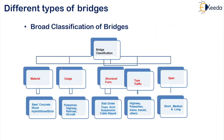This is the broad classification of bridges which you can see in one layout. The classification of bridges: first is based on the material — whether we use steel, concrete, wood, hybrid, stone, or bricks. Based on that, your bridge is classified.